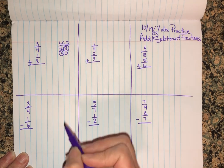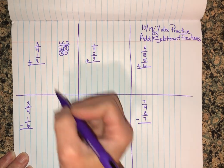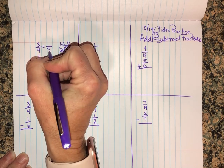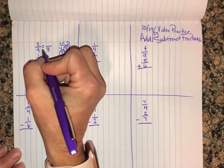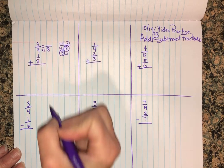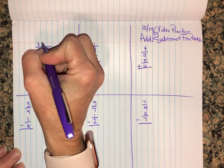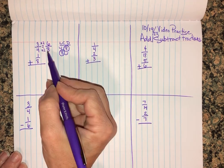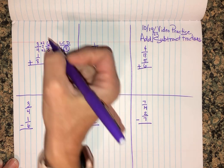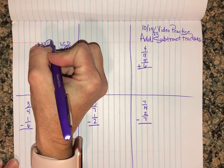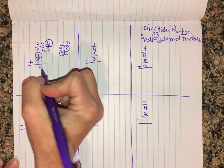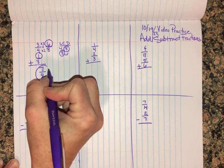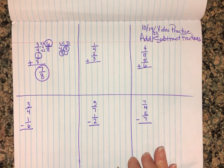Now I'm gonna look over here - do I have to change one-eighth so he can come to my fraction party? Nope, he's good just the way he is, but this guy needs a brand new outfit. He's gonna dress up as an eighth: four times two is eight, three times two is six. Now I can add these together because I have a common denominator of eight. Six plus one is seven, and the denominator always stays the same.